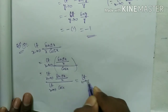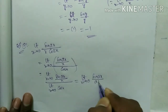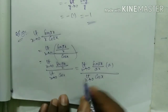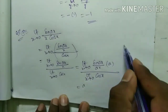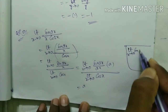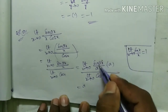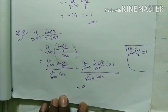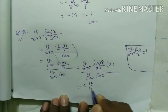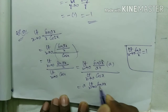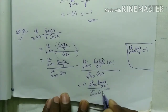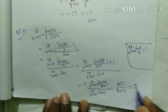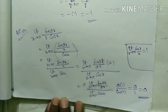This equals limit x tends to 0 of sin(ax) / (ax) × a, divided by limit x tends to 0 of cos x. Applying the standard limit sin(ax) / (ax) = 1, we get a × 1 / cos 0 = a / 1 = a.